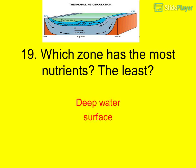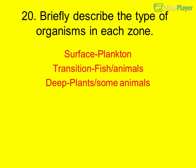Question 19: Which zone has the most nutrients? The least? Deep water has the most nutrients; the surface has the least. Question 20: Briefly describe the type of organisms in each zone. Surface: plankton. Transition: fish and animals. Deep: some plants and animals.